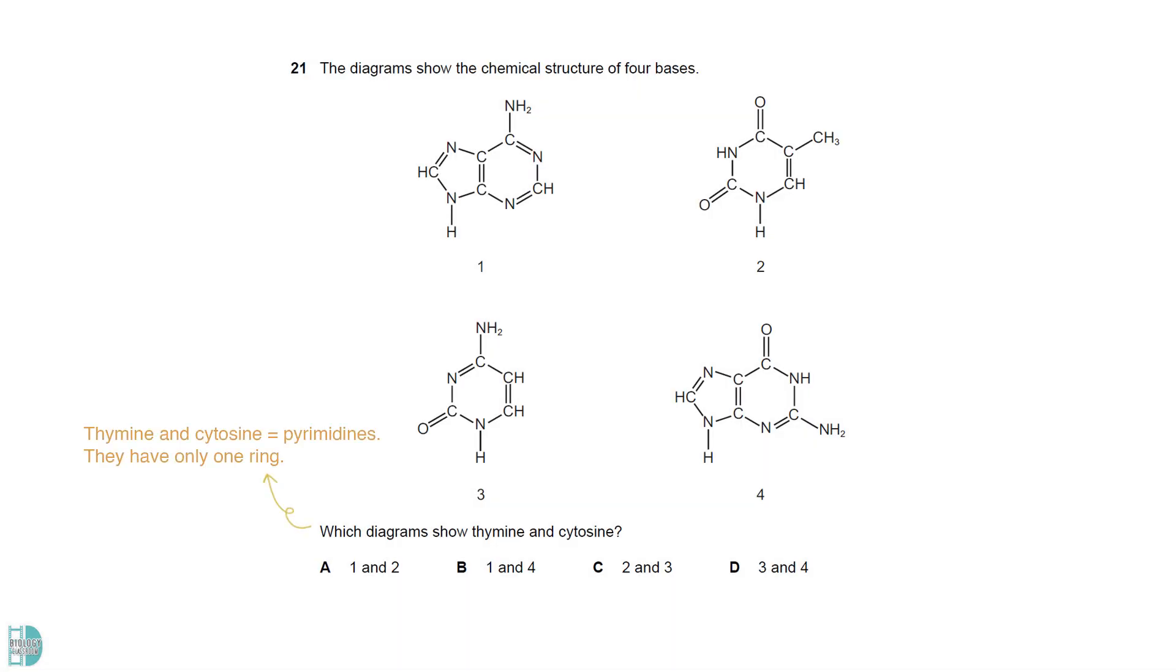Thymine and cytosine are pyrimidines. They only have 1 ring. So the answer is C. 1 and 4 have 2 rings. They are the purines.